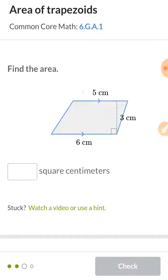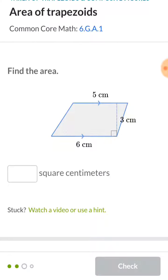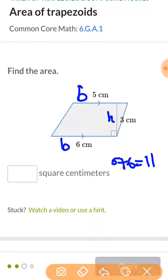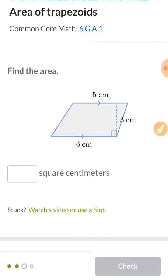So here again you have five plus six is eleven. Eleven times the height which is three is thirty-three. You take half of it to find the final answer, so thirty-three divided by two is sixteen point five.